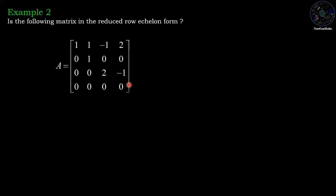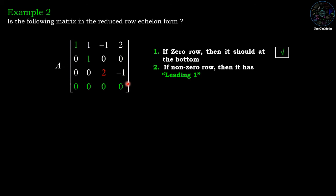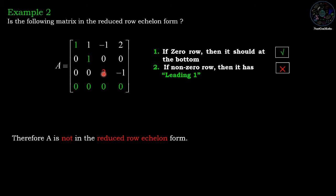Example two: first condition — zero row at the bottom, correct, satisfies condition one. Second condition — leading one. The first row's first nonzero entry is one, satisfying the condition. The second row's first nonzero entry is also one, correct. But in the third row, the first nonzero entry is two instead of one, so it does not satisfy condition two. Hence the matrix is not in reduced row echelon form.